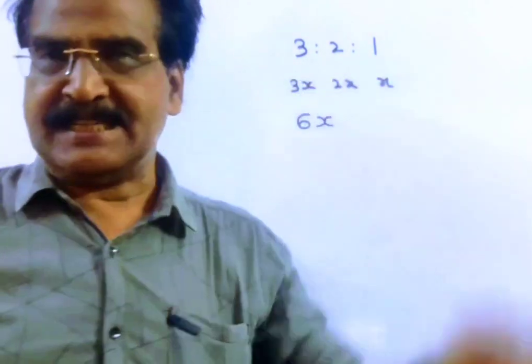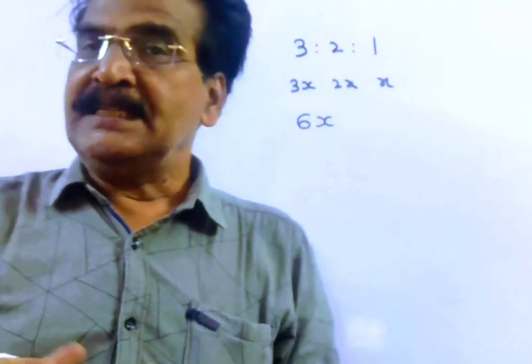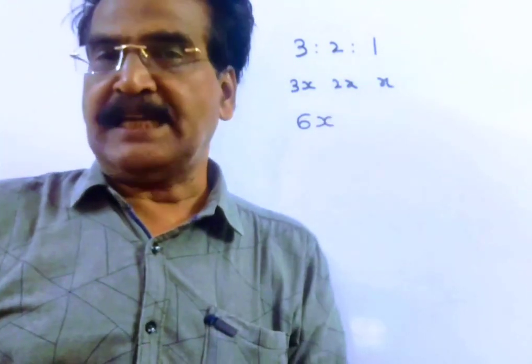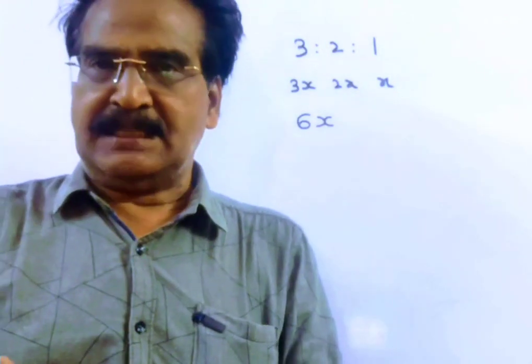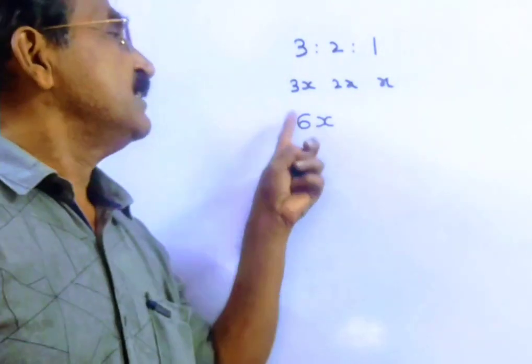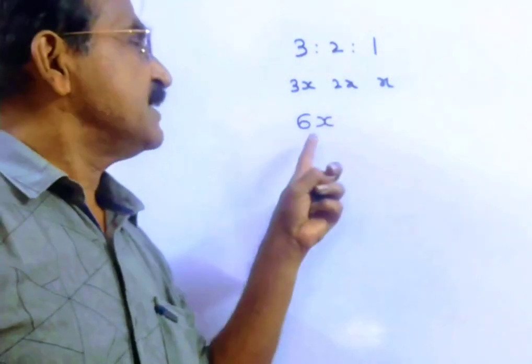2x and x, and the weight of the diamond before it was cut was 3x plus 2x plus x, which is 6x.